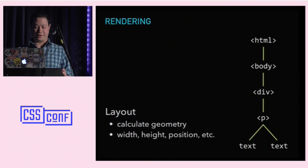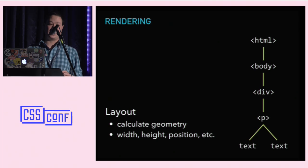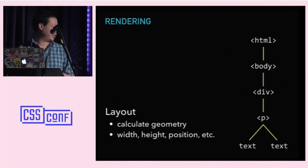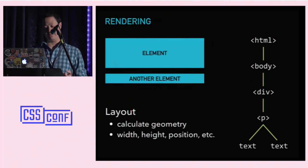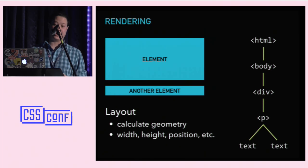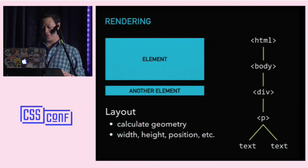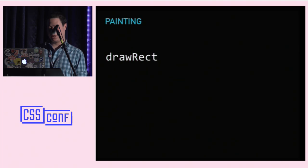With the render tree crafted, your browser is going to start thinking about layouts and calculate geometry. It looks at all elements in the render tree and figures out their widths, heights, margins, padding, and the positions of things on the page. It's very common for the geometry of one element to affect the geometry of another — for example, the height of an element can affect the vertical position of an element after it. Layout can be very costly for your browser to do, so keep that in mind.